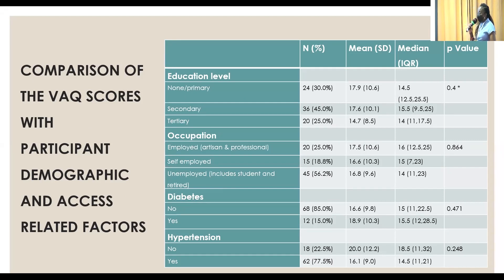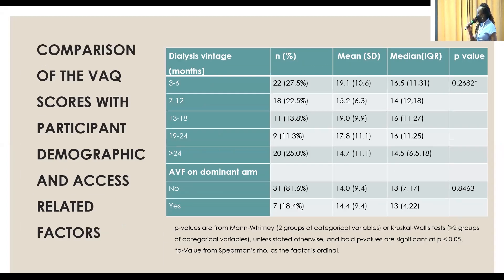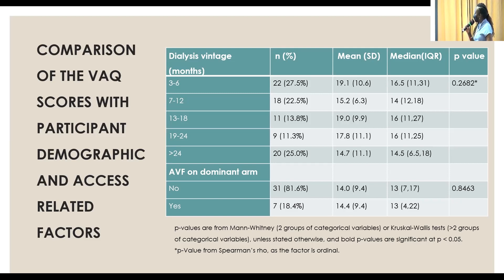Patients at the extremes of age — less than 29 and above 60 — had better vascular access health-related quality of life scores. There was no significant difference by education level or occupation. Patients who had diabetes had a higher score, while those with hypertension, surprisingly, had a better score. Patients who had been on dialysis for a shorter period — three to six months and 13 to 18 months — were more likely to complain about access quality of life, while patients on dialysis for longer were less likely to complain. There was no significant difference whether the AV fistula was on the dominant arm or the other arm.